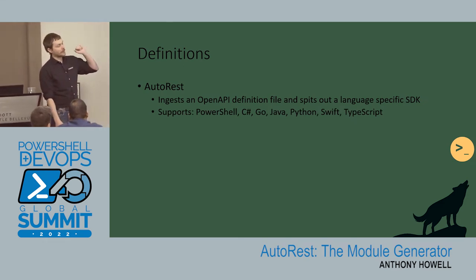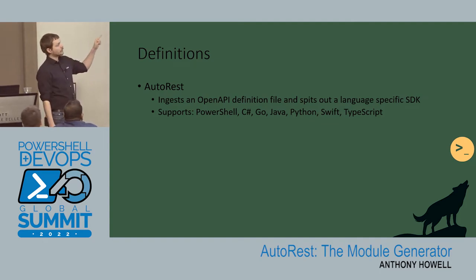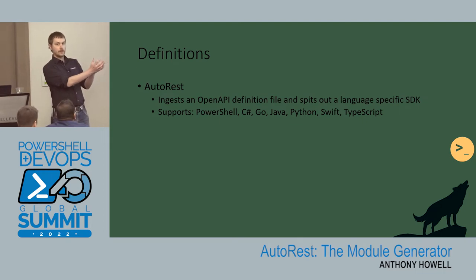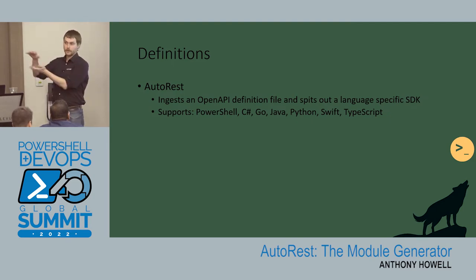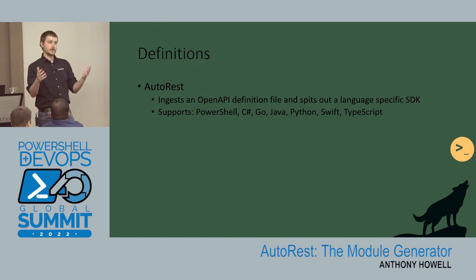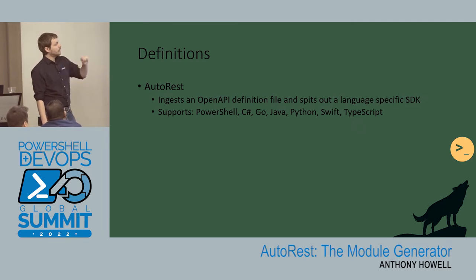Before we get into AutoRest, I want to cover a couple of definitions to make sure we're all on the same page. AutoRest itself is a tool built by Microsoft. You literally take an OpenAPI spec — which is a YAML or JSON representation of an API — you shove it into AutoRest, and AutoRest gives you a PowerShell module. It's a little more complicated than that, but that's the high level. AutoRest supports multiple languages, but we only care about PowerShell.